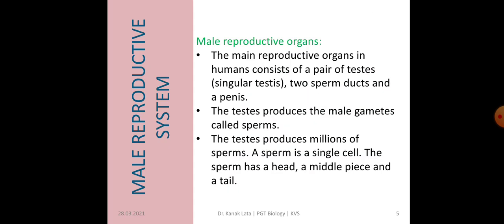Now let us discuss about the male reproductive system. The main male reproductive organs in humans are a pair of testes, two sperm ducts, and a penis. The testes are responsible for producing male gametes which are called sperms. Testes produce millions of sperms, and a sperm is a single cell. When you look at the structure of a sperm, it consists of a head, a middle piece, and a tail.